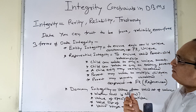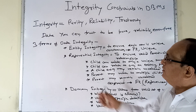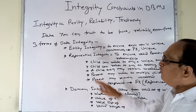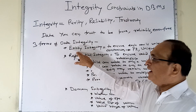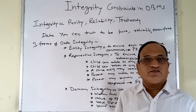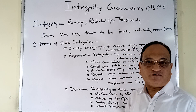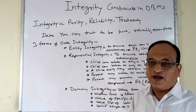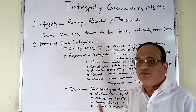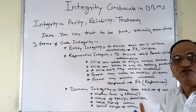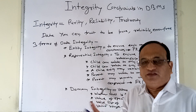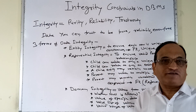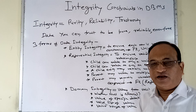Now there are three forms of integrity. The first is entity integrity. An entity is defined as the uniqueness of an object that exists in the real world. Every object in the world is unique, and the most important property of that object is its uniqueness. When we store data about those objects in the database, we also want the data stored to be unique, just like the actual entity that exists in the world.